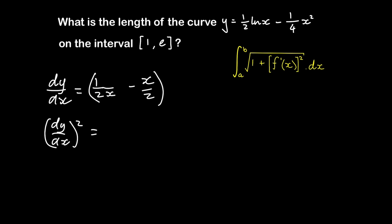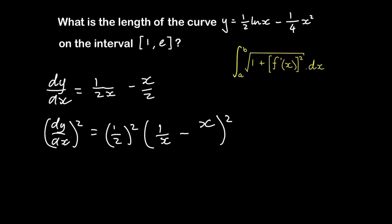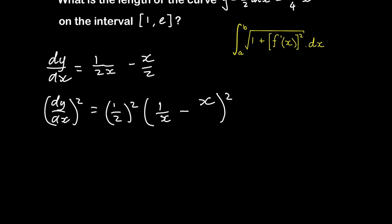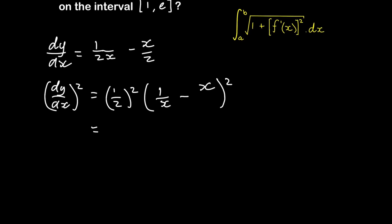It's this now squared, which is — first we square the first term, or let's take out a 1 over 2 first, which is going to be squared. And then we have 1 over x minus x, needing to be squared as well. So 1 over 2 squared is 1 over 4.